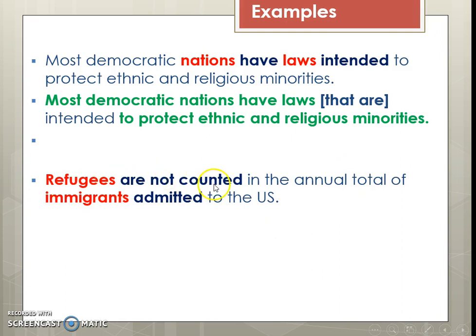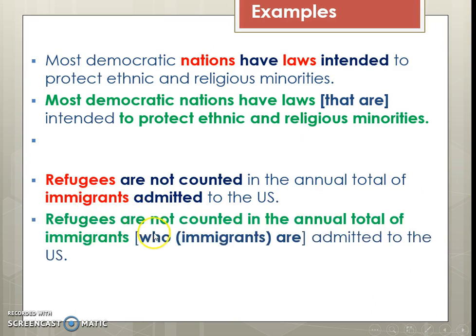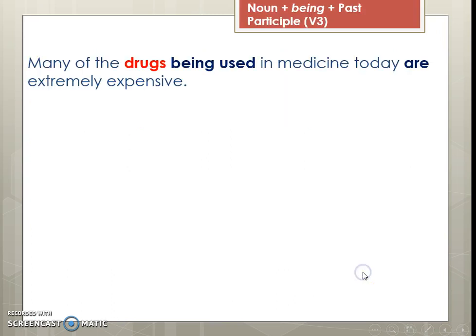'Refugees are not counted in the annual total of immigrants admitted to the U.S.' So they're not counted in the annual total of immigrants. Now we find out more about those immigrants: 'immigrants who are admitted to the U.S.' What we need to realize is that 'who' relates and refers to 'immigrants' — immigrants are admitted to the U.S.